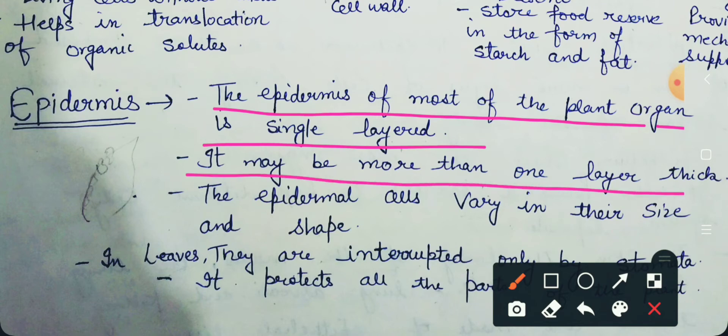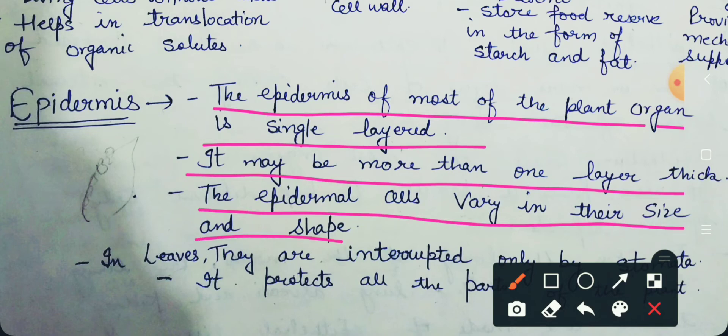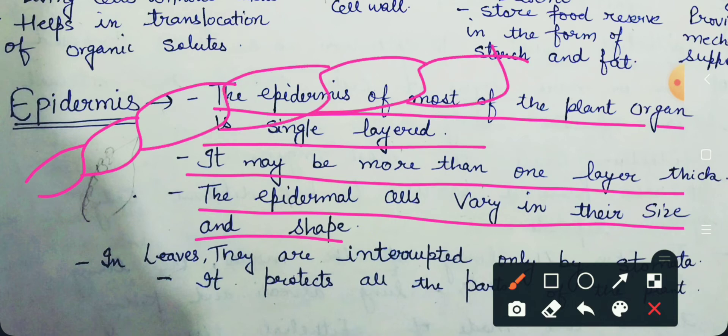So when the epidermis becomes thick, its thickness will not be one layer but more layers, meaning the thickness will increase. The epidermis cells will vary in their size and shape — vary means their size and shape can change.